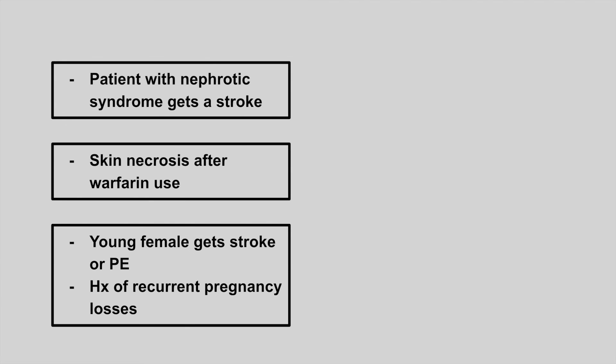Next, we have a patient with nephrotic syndrome who gets a stroke. This is antithrombin deficiency. Patients with nephrotic syndrome are losing antithrombin in their urine, which makes them hypercoagulable and at increased risk of clots.